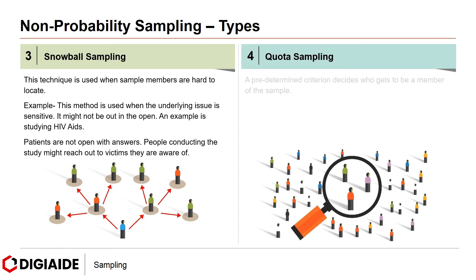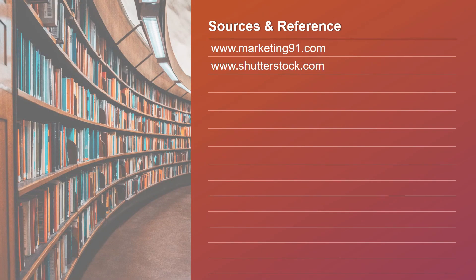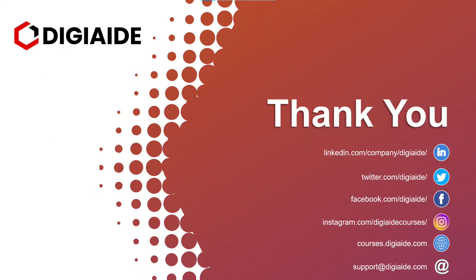And finally, quota sampling. A predetermined criteria decides who gets to be a member of the sample, which is made according to select qualities — for instance, men above the age of 60. It must still represent the whole population, and it is a swift technique to get samples. That's it folks, this brings an end to the topic on sampling. These are some of the sources and links referred to for the content in the video. Thank you and see you in the next video.